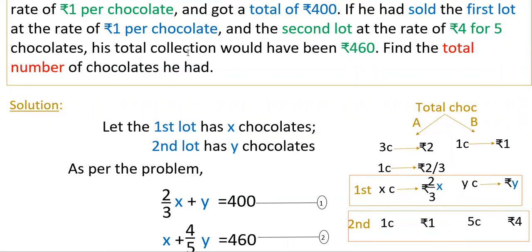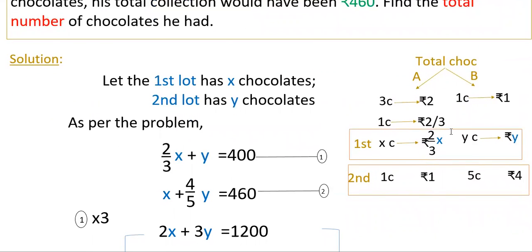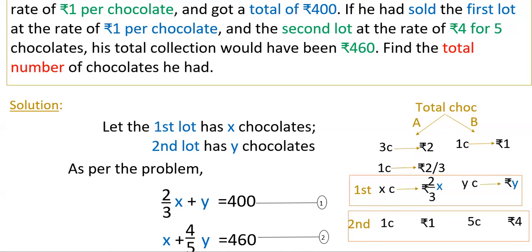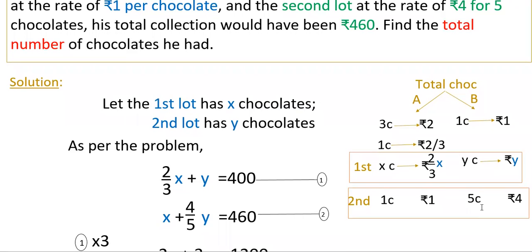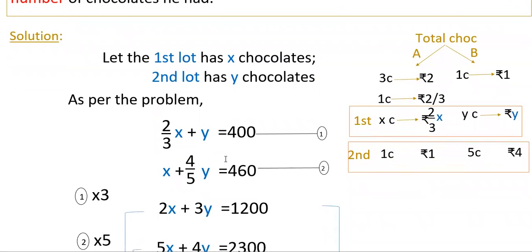Similarly, if he had sold the first lot at 1 rupee per chocolate, then x chocolates cost x rupees. In the second lot, 5 chocolates cost 4 rupees, so 1 chocolate costs 4/5 rupees, and y chocolates cost (4/5)y rupees. The total in this case is 460 rupees, so the second equation is: x + (4/5)y = 460.